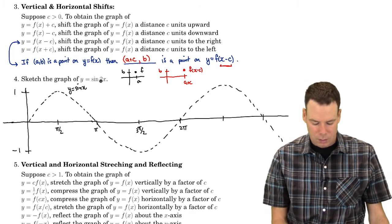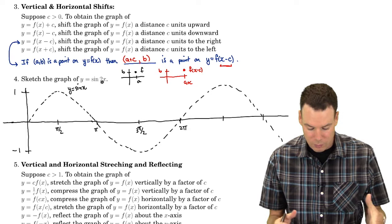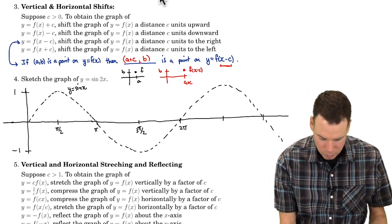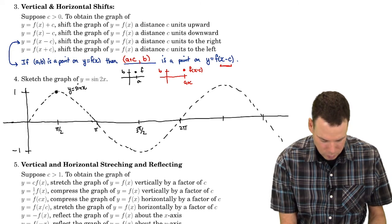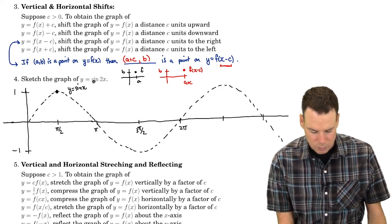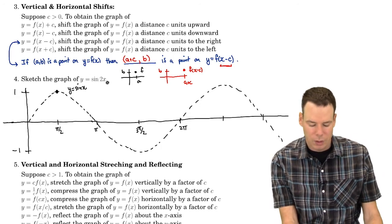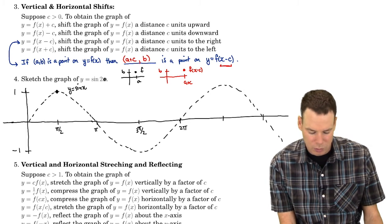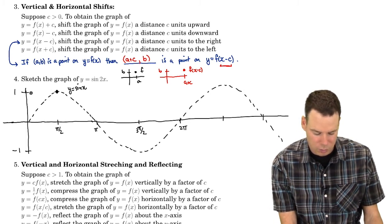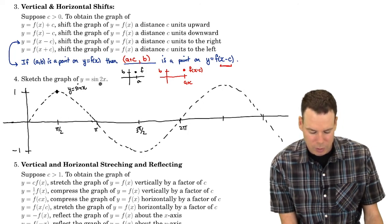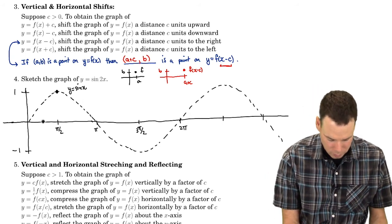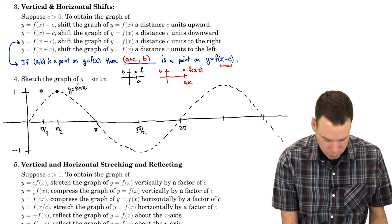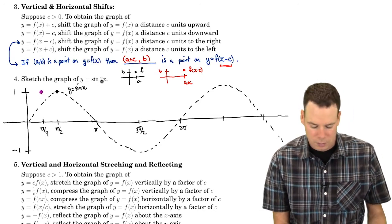Now what about y equals sine of 2x? I think about it like this: if I know a point on the original function, what's the corresponding point on my new function? When x is pi/2, the sine function outputs 1. For sine of 2x, I need x such that 2x equals pi/2 — that gives x equals pi/4. So the point at pi/2 on sine corresponds to pi/4 on sine of 2x.